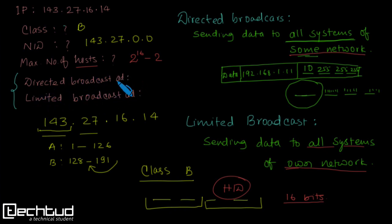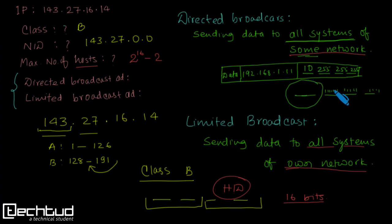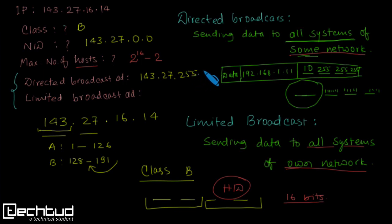For the directed broadcast address, we take the network ID and set all host bits to 1. The network ID is 143.27, and with all ones in the host portion that gives 255.255. So the directed broadcast address is 143.27.255.255.